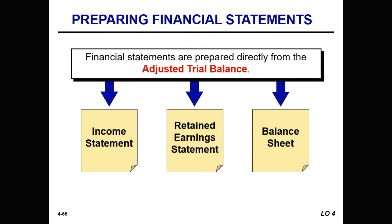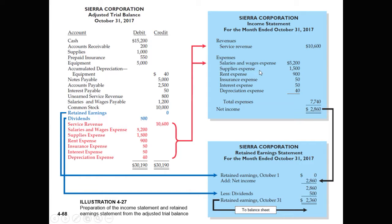We create the financial statements directly from the adjusted trial balance. We begin with the income statement, move to the retained earnings statement, and then the balance sheet. Starting with the income statement, we pull revenues and expense amounts and translate them over, and we can then generate net income.